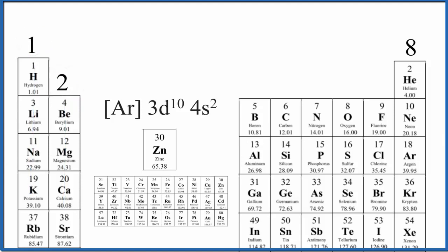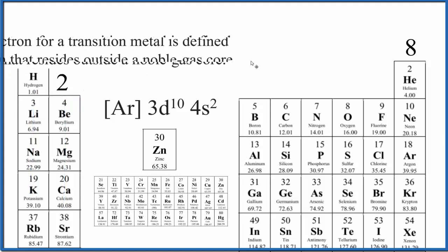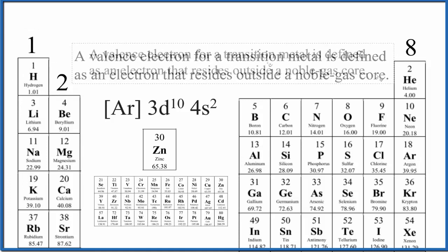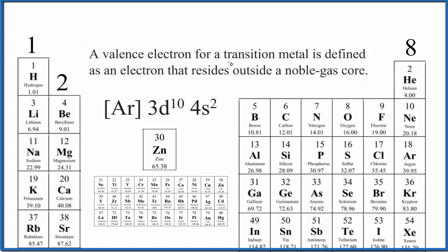This is a common definition on how we find the valence electrons for transition metals like zinc. So valence electrons, when we're talking about transition metals, that's the electrons outside the noble gas core. This is the noble gas core. So for zinc, you could say there's 10 plus 2. You could say there are 12 valence electrons, and based on this definition, that would be correct.